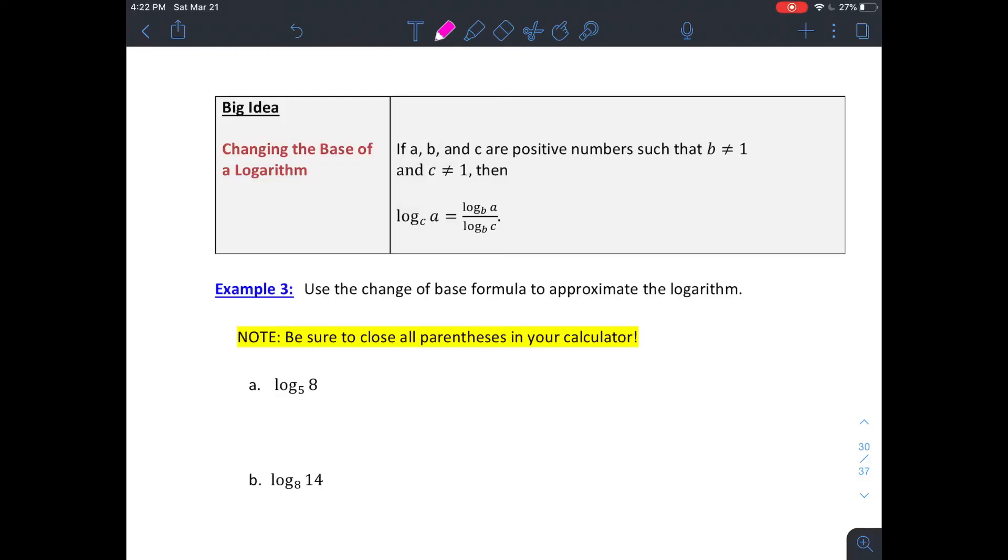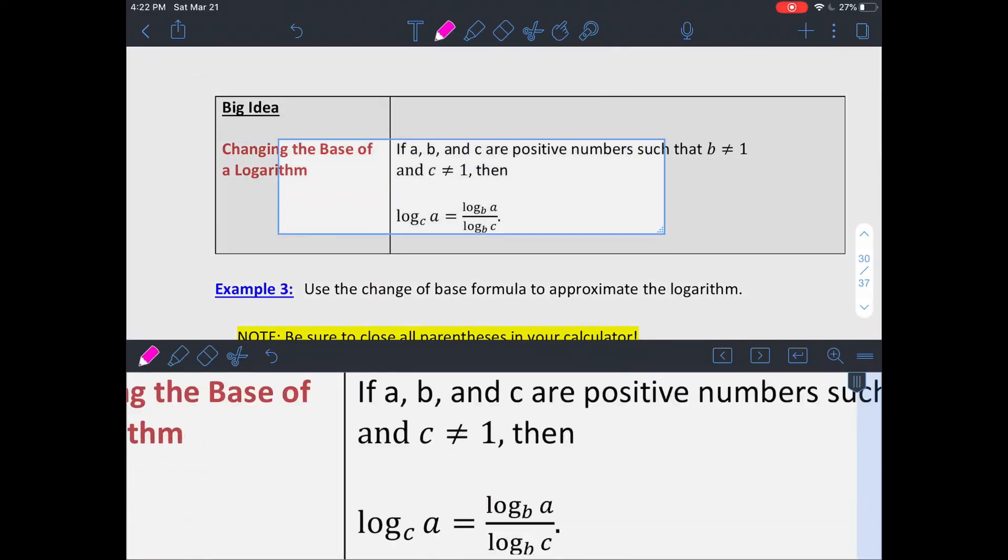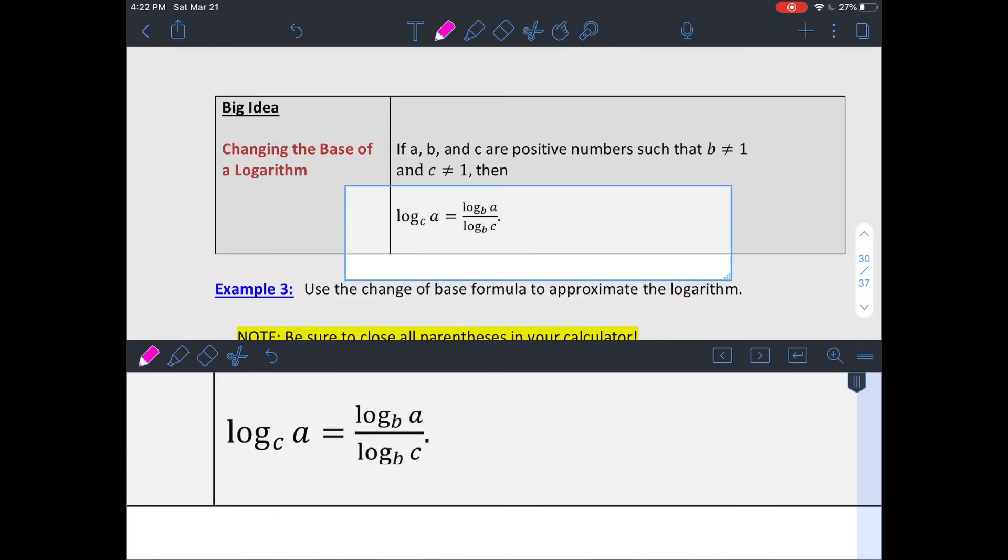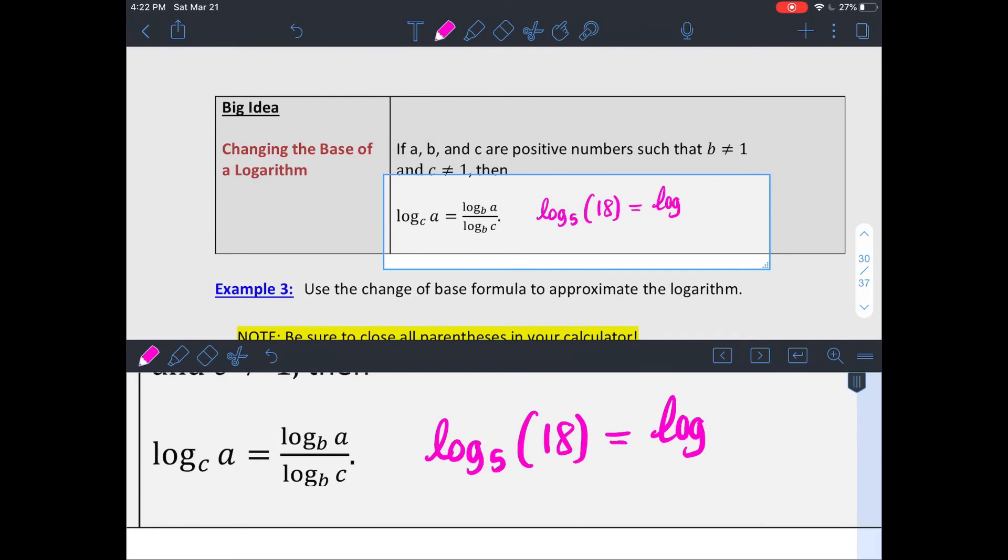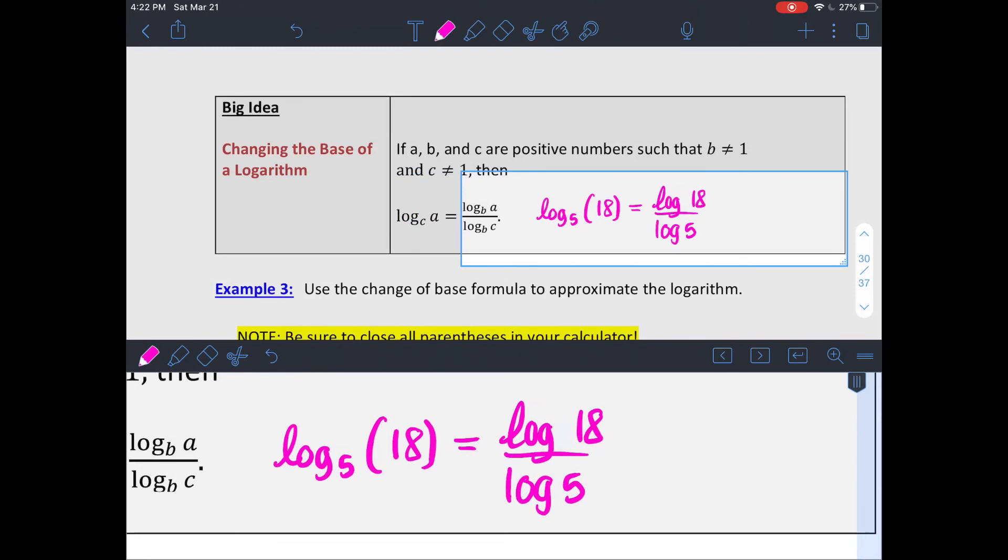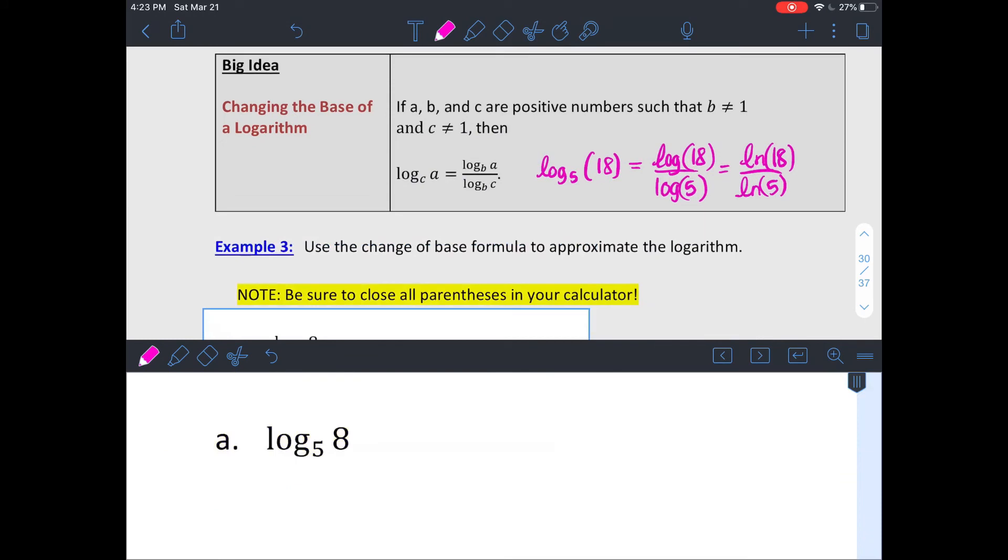Okay, one last thing. So, sometimes logarithms aren't whole numbers, and we need to approximate them. But your calculator only does log of base 10 and natural log. So there's this thing called a change of base formula. If it's a base other than 10 or e, it's actually equal to the base 10 logarithm of the inside divided by log of the original base, or natural log of that same thing. Closing parentheses in your calculator is important.